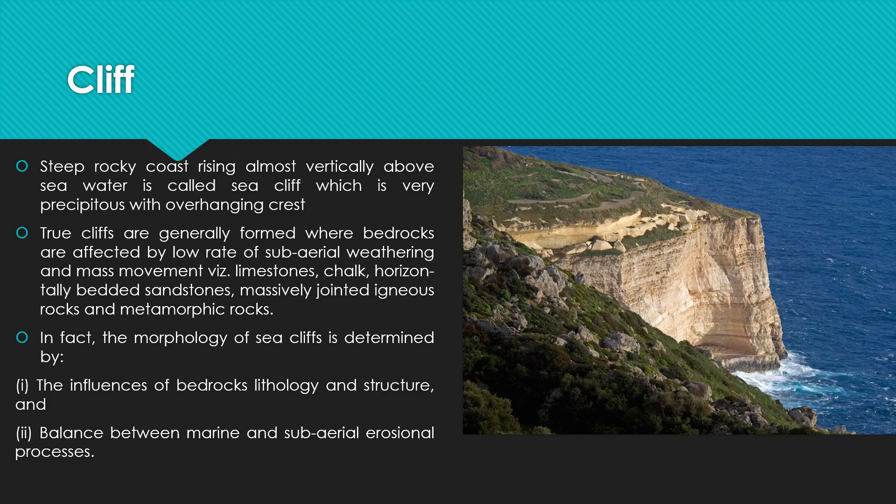It is a very steep, vertical feature of a sea cliff. True cliffs are generally formed where bedrocks are affected by a low rate of sub-aerial weathering and mass movement. True cliffs are formed in deep rock near the bedrocks, with low rate of superior weathering.